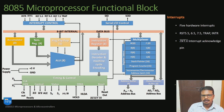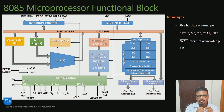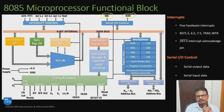Next is the interrupt block. There are five hardware interrupts: RST 5.5, RST 6.5, RST 7.5, TRAP, and INTA complement — the interrupt acknowledgement pin used by the microprocessor to acknowledge an interrupt raised by an external peripheral. The next block is the serial IO control block, which has two pins: SID (Serial Input Data) and SOD (Serial Output Data). This block is used for establishing communication between the microprocessor and external peripherals.